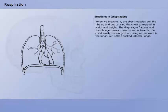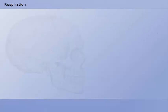When we breathe in, the chest muscles pull the ribs up and out, causing the chest to expand in width and height. The diaphragm flattens and the ribcage moves upwards and outwards. The chest cavity is enlarged, reducing air pressure in the lungs. Air is then sucked into the lungs.